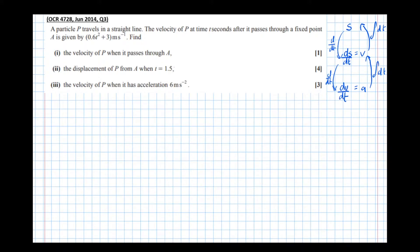So the expression that gives the velocity, 0.6 t squared plus 3, is at time t seconds after passing through point A. So that tells us that point A is passed through when t equals 0. So we're going to let t equal 0, which means that velocity is 0.6 times 0 squared plus 3 equals 3 meters per second. And units are important. We should always write the units in applied mechanics questions.